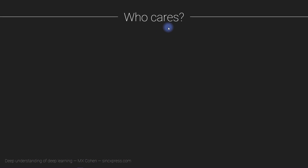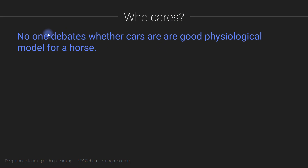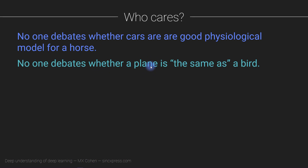No one debates whether a car is a good model for a horse. Nobody buying a car asks which car is a better model for a horse. Likewise, you don't buy a plane ticket and think 'I'm getting inside a bird; this plane is basically a model for a bird.' They share some similarities — they fly through the air — but it's ridiculous to even have that discussion.